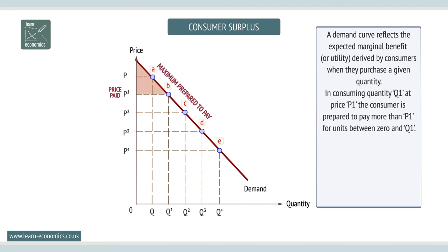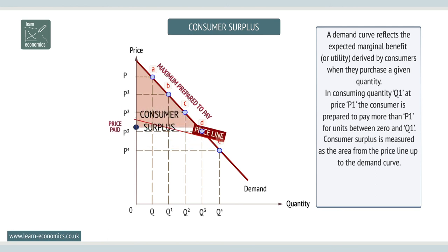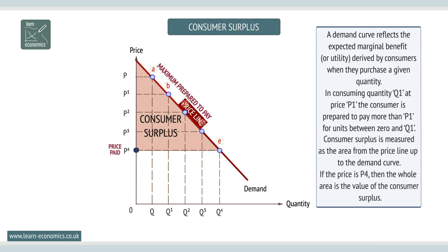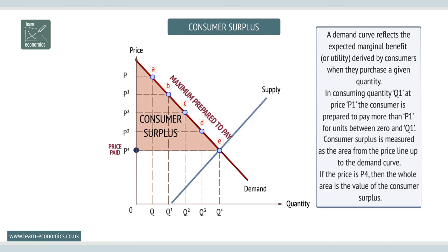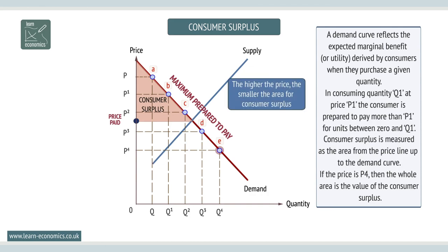Consumer surplus is measured as the area from the price line up to the demand curve. If the price is P4, then the whole area is the value of the consumer surplus. The higher the price, the smaller the area for consumer surplus.